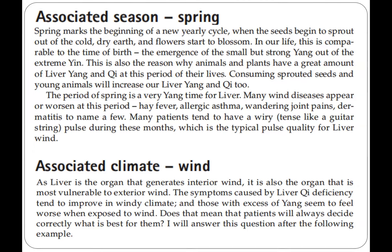Wood element — the concept. The associated season of the wood element is spring. Spring marks the beginning of a new yearly cycle when seeds begin to sprout out of the cold dry earth and flowers start to blossom. In our lives, this is comparable to the time of birth — the emergence of the small but strong yang out of the extreme yin. This is also the reason why animals and plants have a great amount of liver yang and qi at this period of their lives; consuming sprouted seeds and young animals will increase our liver yang and qi too.